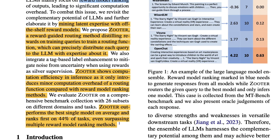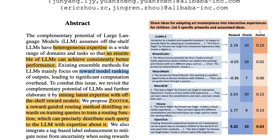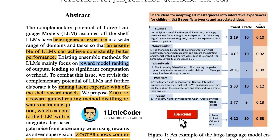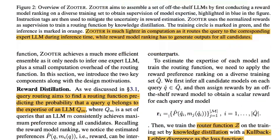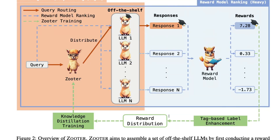ZOOTER can precisely distribute each query to an LLM with expertise about it. For example, imagine you have a question that says: 'Share ideas for adapting art masterpieces into interactive experiences for children — list five specific artworks and associated ideas.' There are six LLMs in this case — six experts. What ZOOTER does is tell you where to route, so for this question ZOOTER routes it to OpenChat.